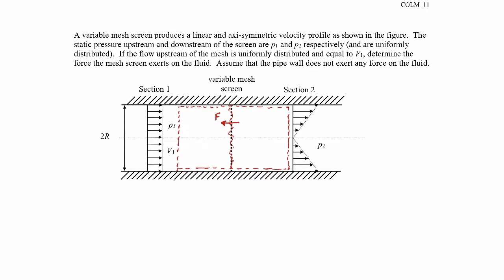I'll draw the force that the mesh exerts on the fluid to the left and just label it F. I'll fix a coordinate system in the x direction. That force F is the force the mesh screen is exerting on the fluid as it flows through. The control volume is weaving in and out of the mesh such that the mesh is touching the control volume. We'll write out the linear momentum equation in the x direction, because that's the direction the force is acting in and that's what I'm trying to find.